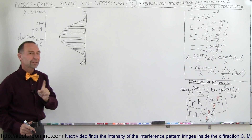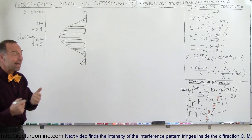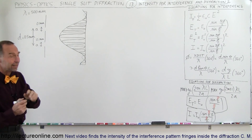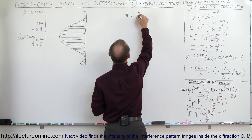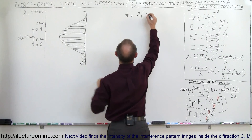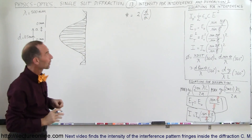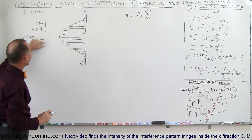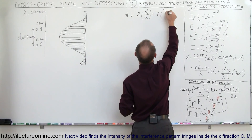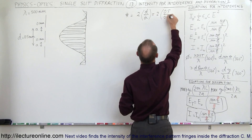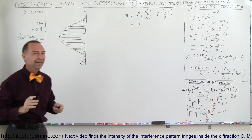The ratio of the number of fringes inside the central maximum of the diffraction pattern can be calculated as follows. The number of fringes is equal to 2 times the ratio of the distance between the slits divided by the size of each slit. So if we do that, we get 2 times 0.5 divided by 0.1, which is 5 times 2, which equals 10. So we should be able to see 10 fringes.